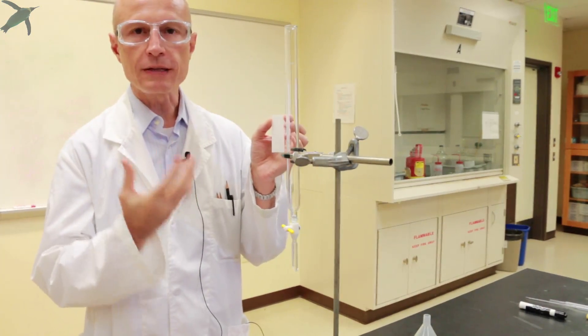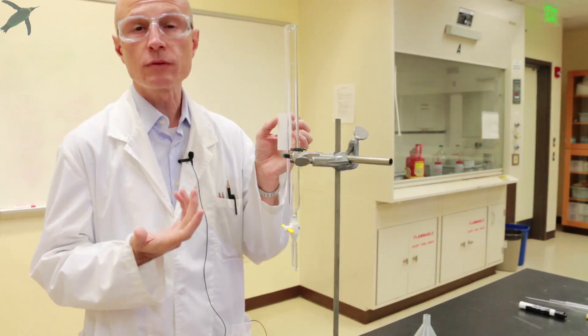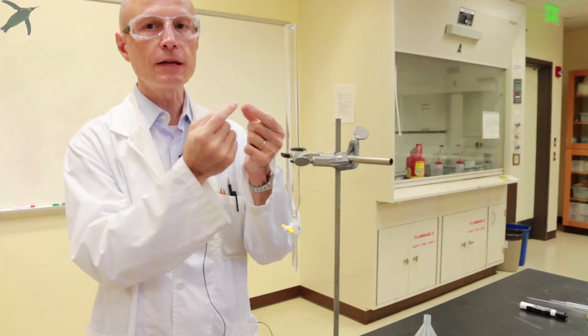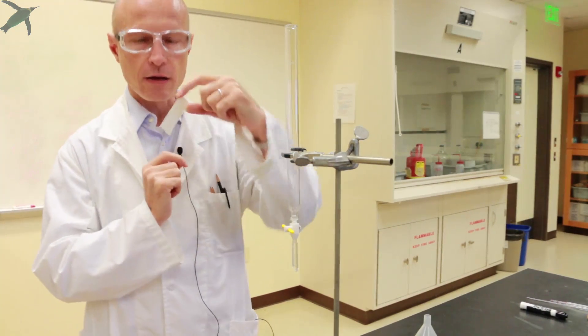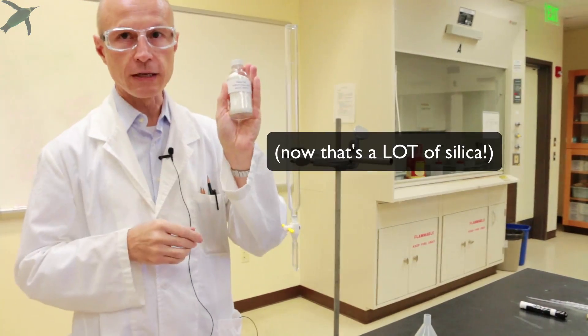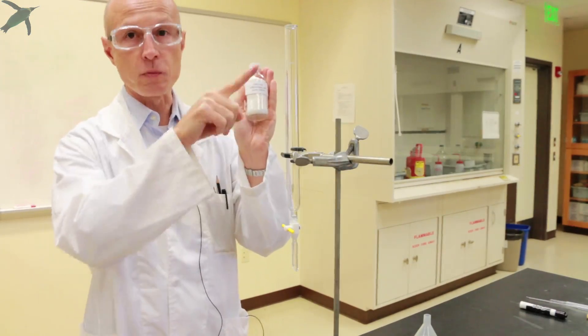If you want to have a sizable amount of compound, you have to scale it up. So to scale it up, you don't use just a very thin layer of silica on a plastic backing, you use a lot of silica and you pack a column of it.